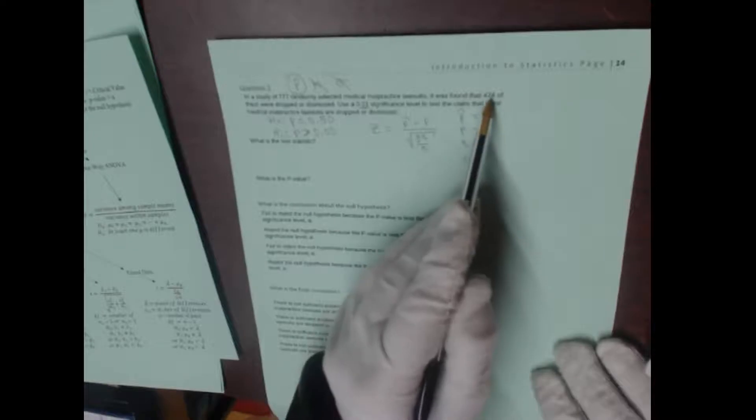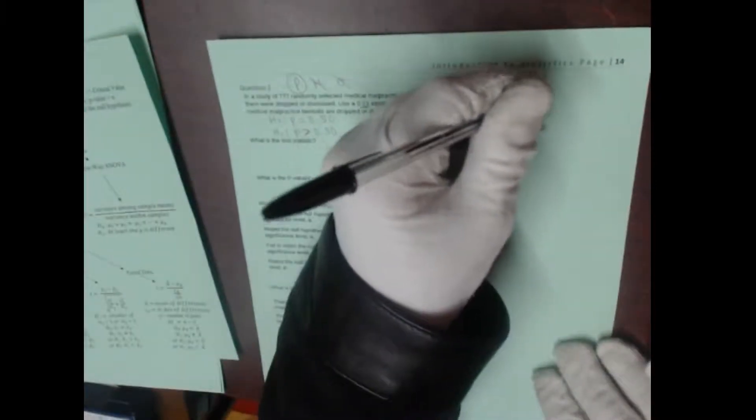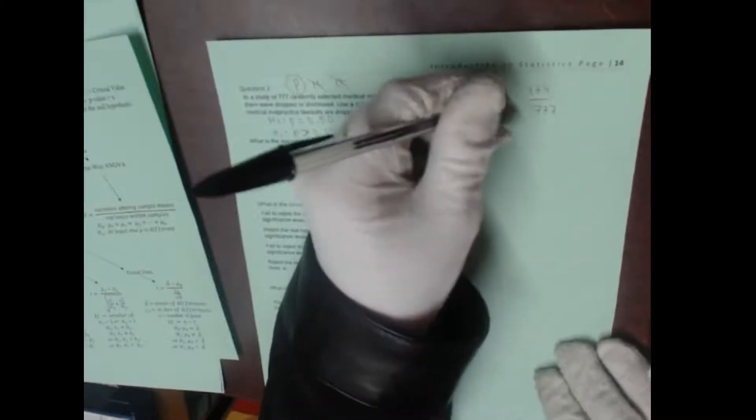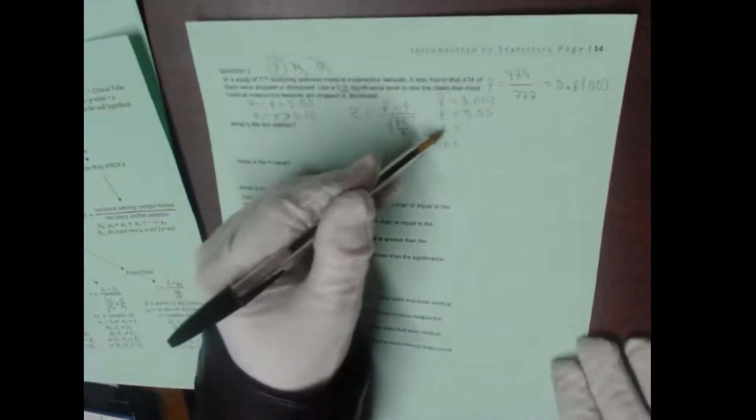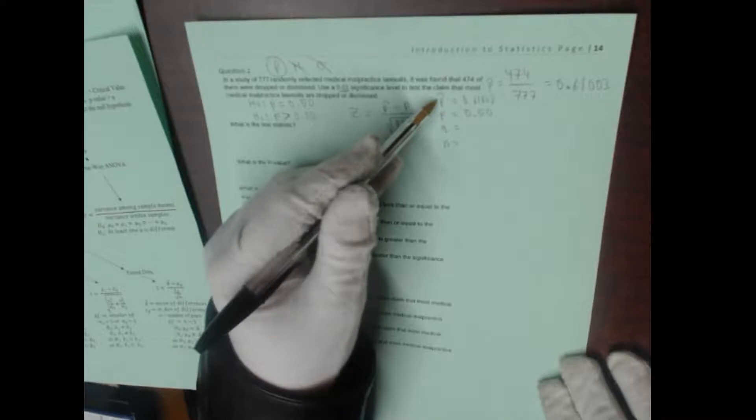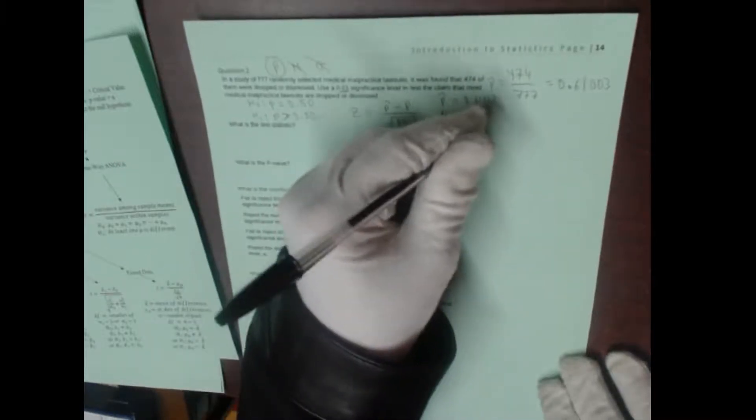In this case, p-hat we get by actually doing the math. So 474 divided by 777 is going to be p-hat. So I grab my calculator, 474 divided by 777. So we get 0.61003. Okay, so 0.61003, that is our p-hat. p comes from the null hypothesis, which is 0.50. And remember that q is equal to 1 minus p, not 1 minus p-hat. 1 minus p, so that means it's also going to be 0.50. p and q should always add up to 1. n is our sample size, 777.